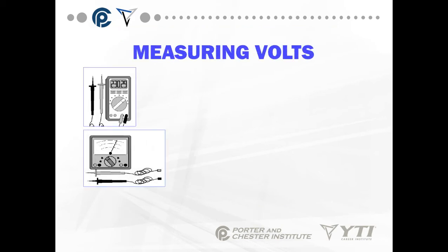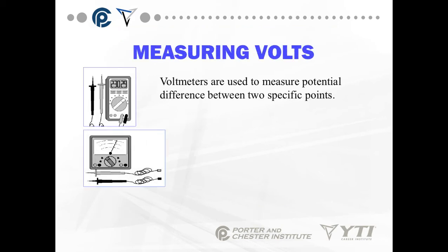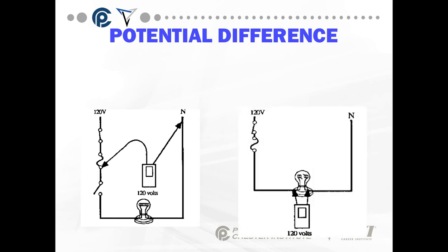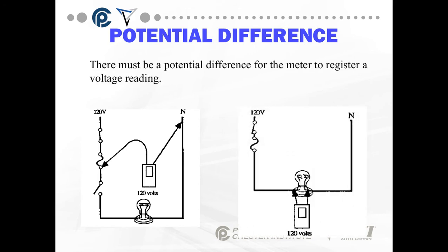We measure volts with a voltmeter. It's used to measure the potential difference between two specific points. Voltmeters are available in analog or digital. If we take our meter and stick it on an electrical circuit, there has to be a potential difference for the meter to register a voltage.